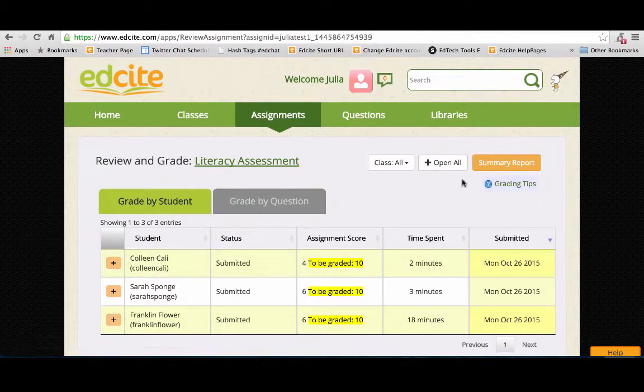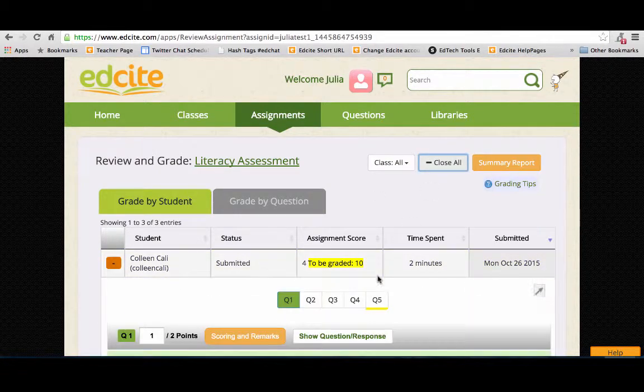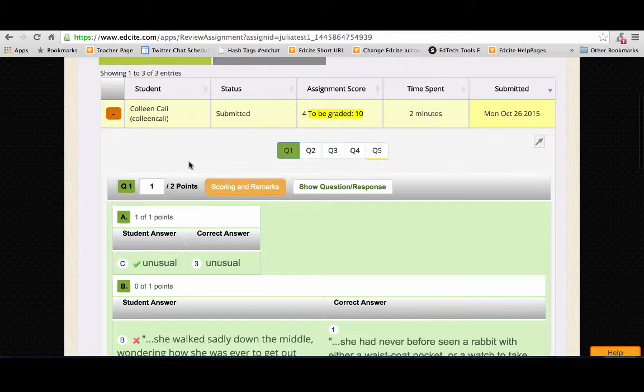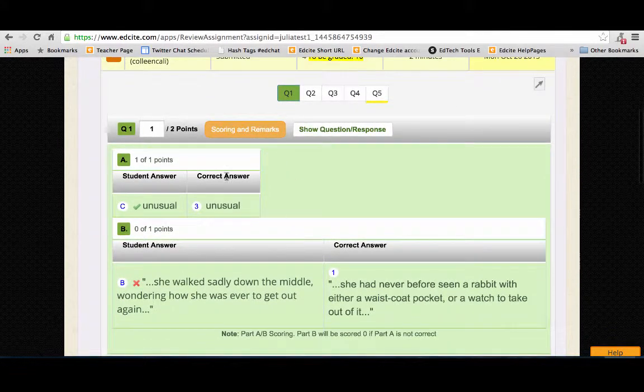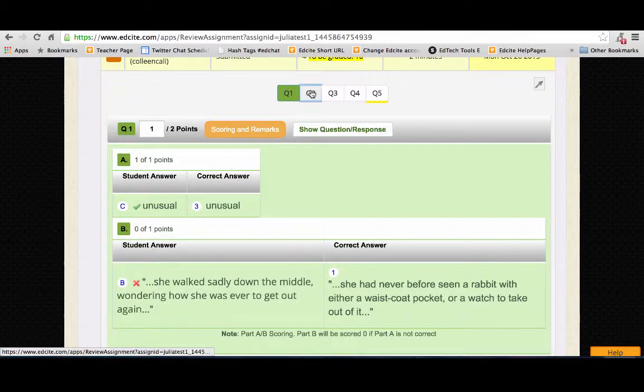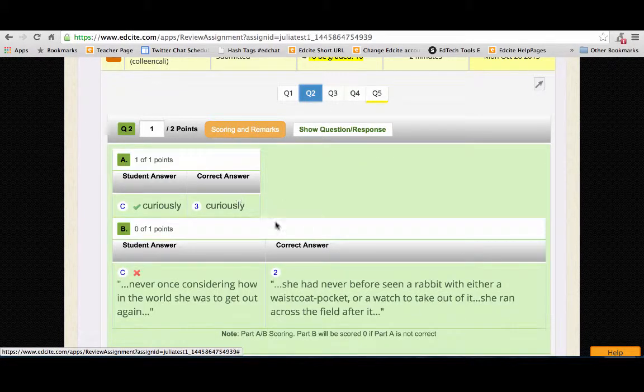So you can grade by student. I could open all. I could go through and see, so Colleen Callie, let's see. So she's got this first part correct, second part not correct, first part correct, second part. So I'm noticing a trend.